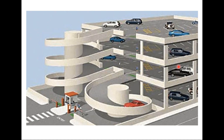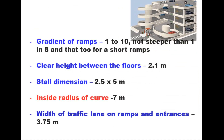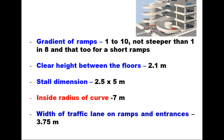Important design standards for multi-story car parks: the gradient for ramps should be 1 in 10, and in no case steeper than 1 in 8 (for a short ramp). Clear height between floors should be 2.1 meter. Stall dimension is 2.5 meter by 5 meter. Inside radius of curves is 3.7 meter, and the width of the traffic lane on ramps and entrance is 3.75 meter. Movement on ramps is one-way.